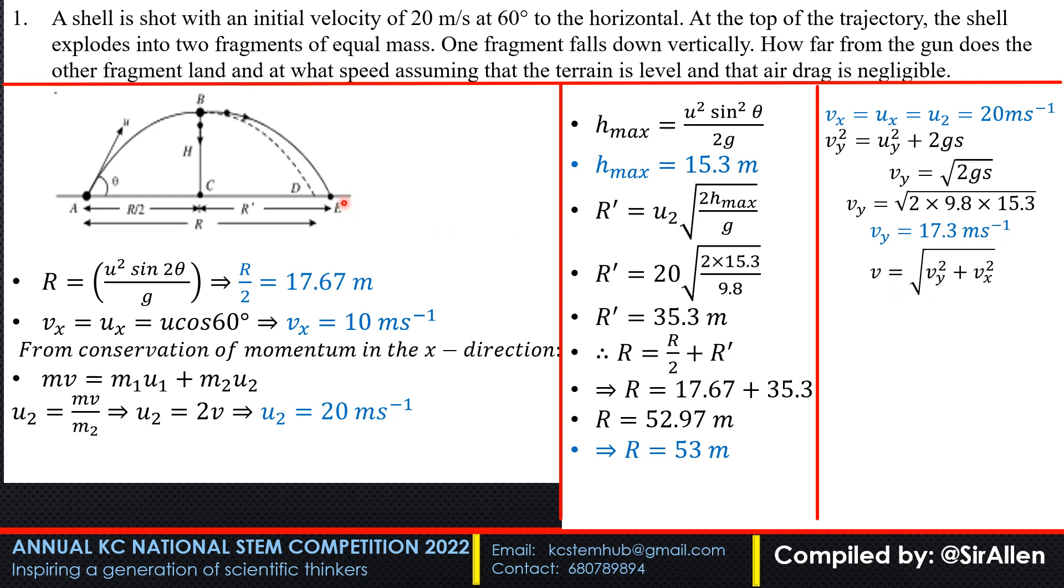The speed at which it hits the ground is the square root of the vertical component squared plus the horizontal component squared. The vertical component is 17.3, the horizontal is 20. So we get approximately 20 meters per second. And yes, guys, that was what you were required to do in this question.